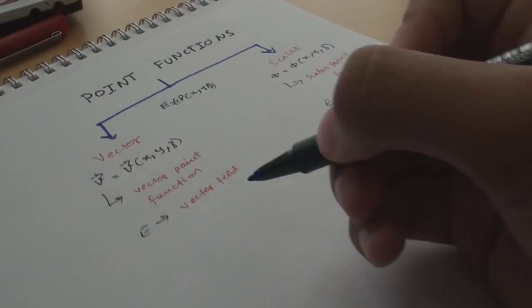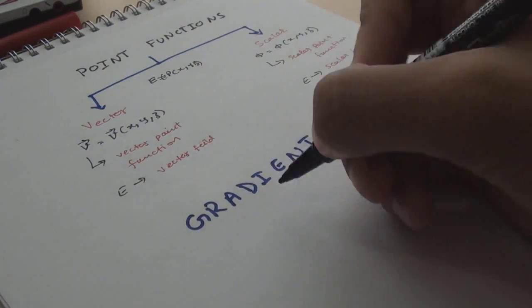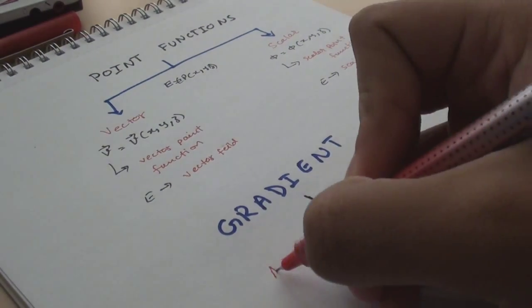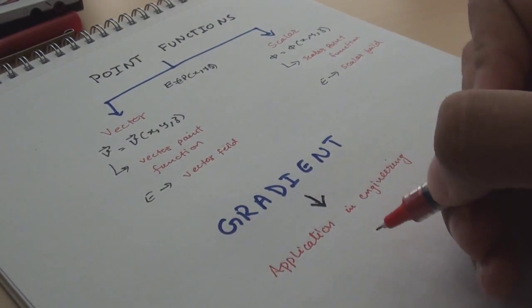In fact, some of the vector fields can be obtained by applying gradient to the scalar fields. This concept is of great practical advantage since comparatively, it's easier to deal with a scalar field. And because of this, gradient finds its application in engineering and physical sciences.